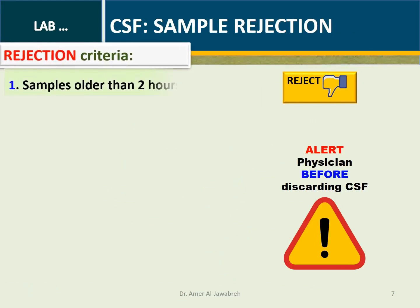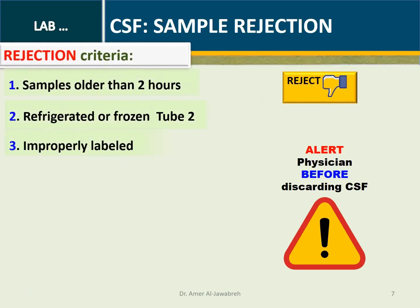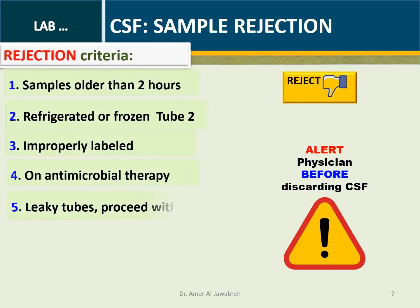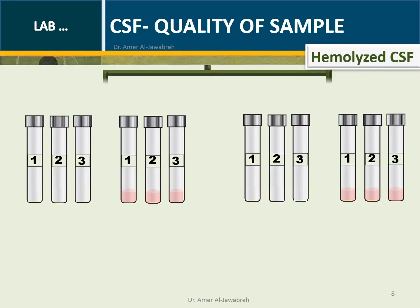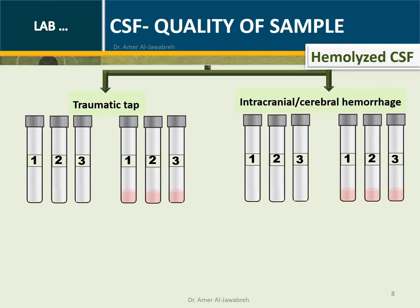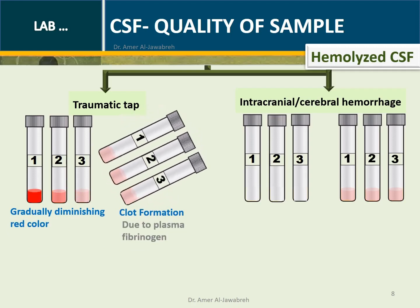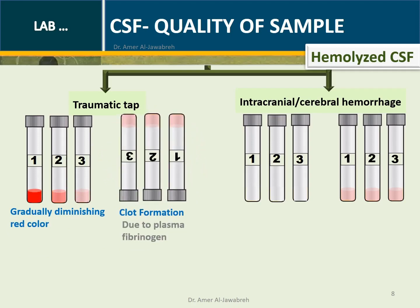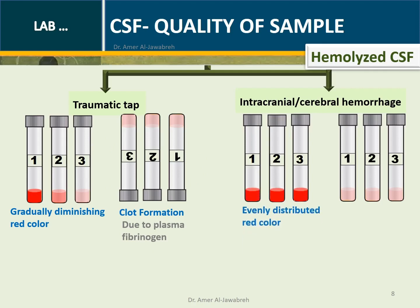CSF Sample Rejection: A CSF sample can be rejected under any of the following conditions; however, always alert the physician before discarding. Regarding quality, hemolysis in CSF may be caused by a traumatic tap or hemorrhage. A traumatic tap is viewed as gradually diminishing red color across the three tubes, or clot formation due to plasma fibrinogen. Hemorrhage is viewed as evenly distributed red color across the three tubes, or the absence of clot.